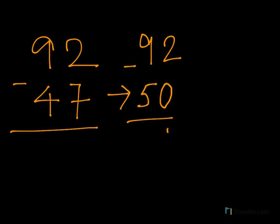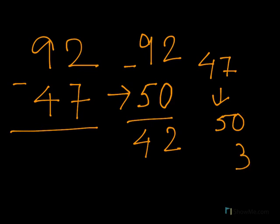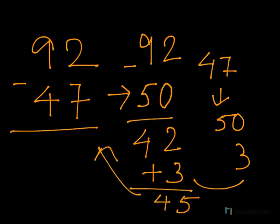Now we know from 47 to 50 there are three numbers, so we will add this 3 to our 42, and we get our final answer: 45. Now the last example. Here we will take 43 and we will subtract 18 from it.